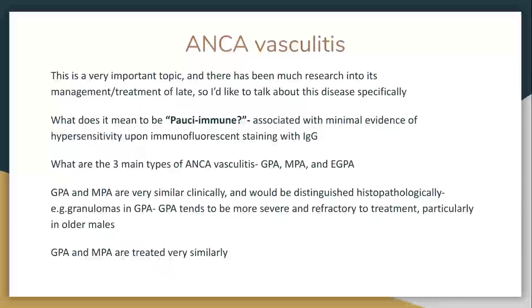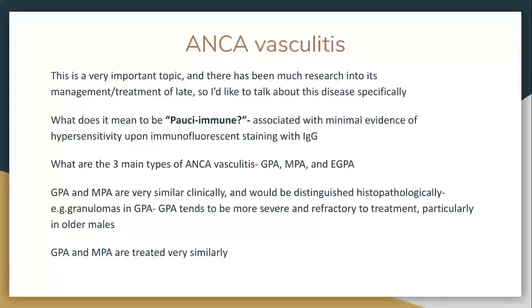A lot more used to happen in the early days — patients died. Everyone got Cytoxan, lived for the most part, but had lots of side effects. As time has gone on, more and more medications have come along. Pauci-immune vasculitis — what does that mean? It's associated with pauci-immune findings on immunofluorescence, as opposed to other types. All the ANCA antibodies are part of this.